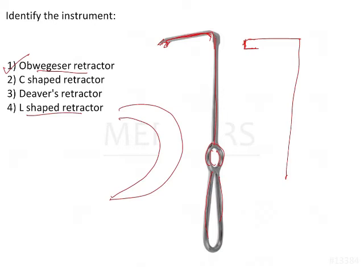The Obwegeser retractor, in addition to the L-shape, has a notch at the end of the instrument. This notch is used to insert itself in the region of the anterior border of the ramus of the mandible, so that you can place the retractor in that region and it will lock on. When you retract the mandible, the instrument will not be easily separated, helping in proper retraction — whereas in other cases the instrument can easily come out. This provides stability, and that is the advantage of this instrument.